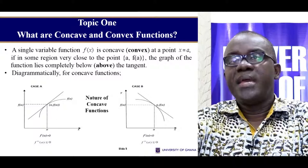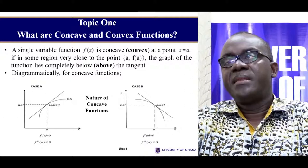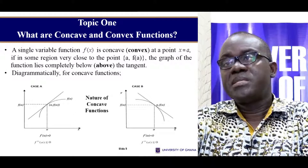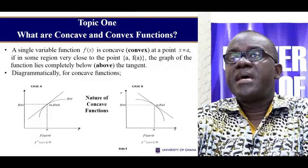What you see here is that the tangent is above and the graph is increasing. Here, the tangent is again above and the graph is over here. In this situation the graph is an increasing function, here it is a decreasing function. But in both situations, you can see that the tangent is above the function itself. So we look at this as a concave sort of function.